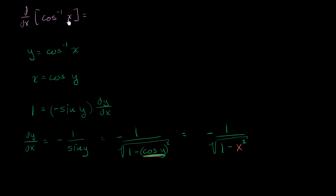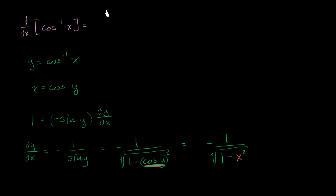The derivative with respect to x of the inverse cosine of x is equal to negative 1 over the square root of 1 minus x squared.